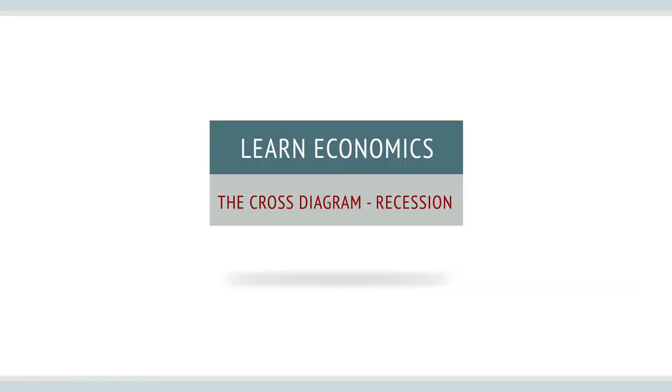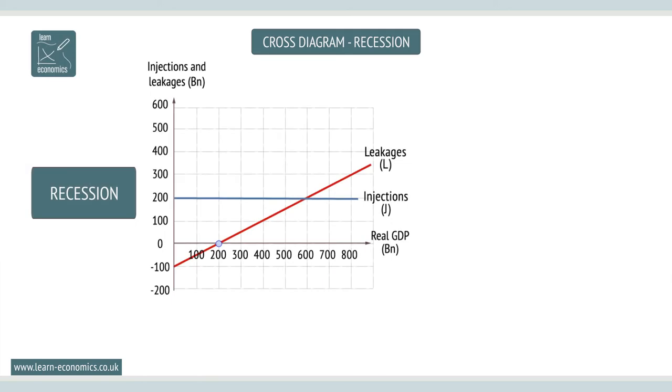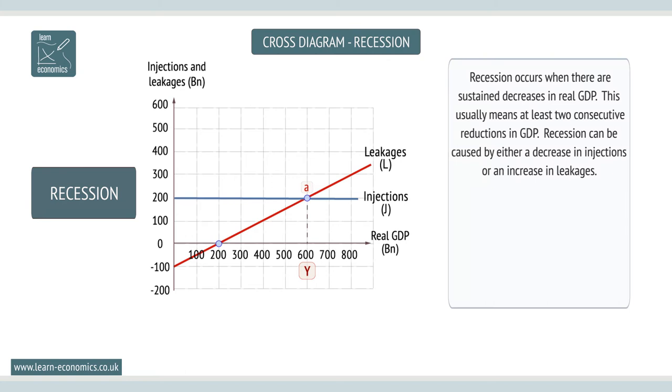Recession occurs when either consumption or injections decrease or leakages increase. Recession occurs when there are sustained decreases in real GDP. This usually means at least two consecutive reductions in GDP.